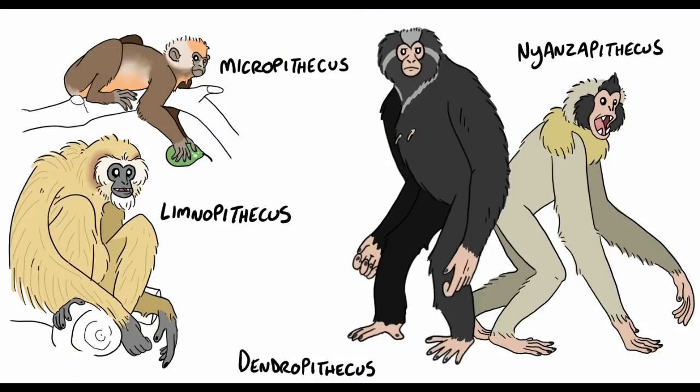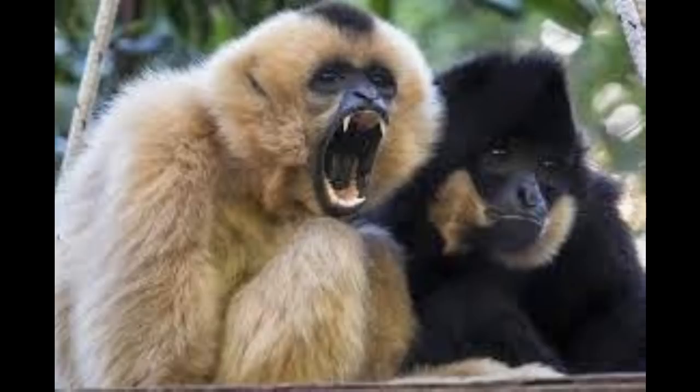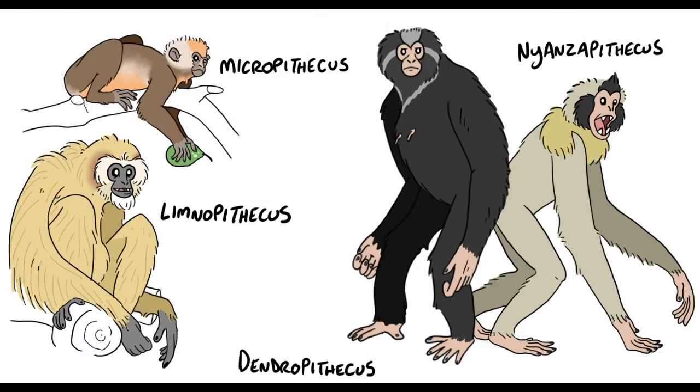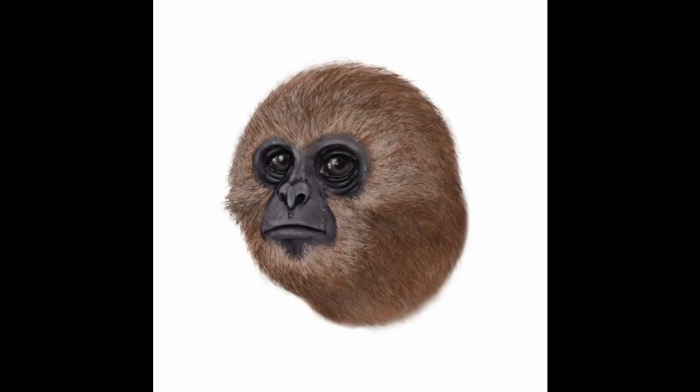Limnopithecus, similarly, is thought to have been gibbon-like, although whether or not this ancient animal is the ancestor of modern hylobatids has yet to be seen. It may be more likely than Dendropithecus, however, as Limnopithecus is thought to be monomorphic in its large canine teeth, just like modern hylobatids. Nianzopithecus is another potential gibbon relative, although the consensus is currently that small apes appear to have convergently evolved gibbon-like facial features, given that these three species lack the definitive hylobatid synapomorphies.